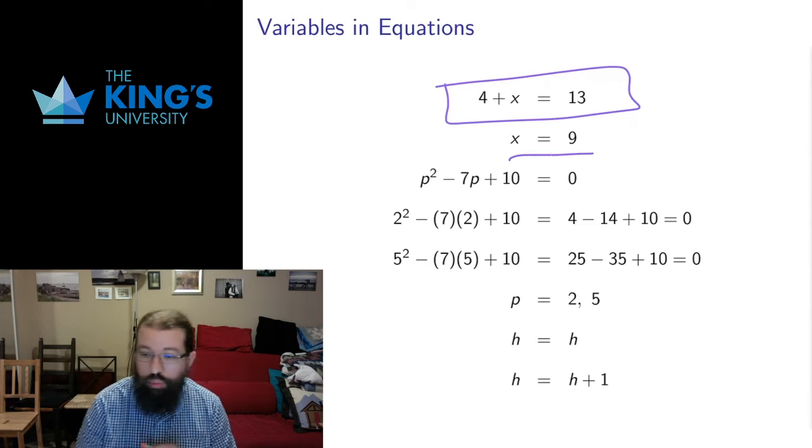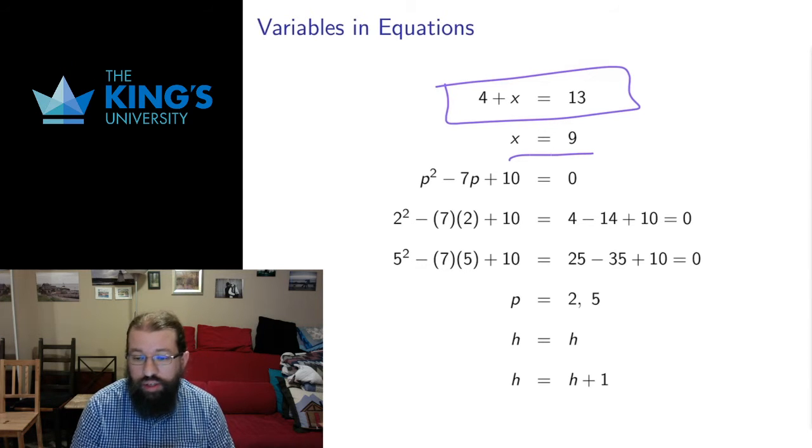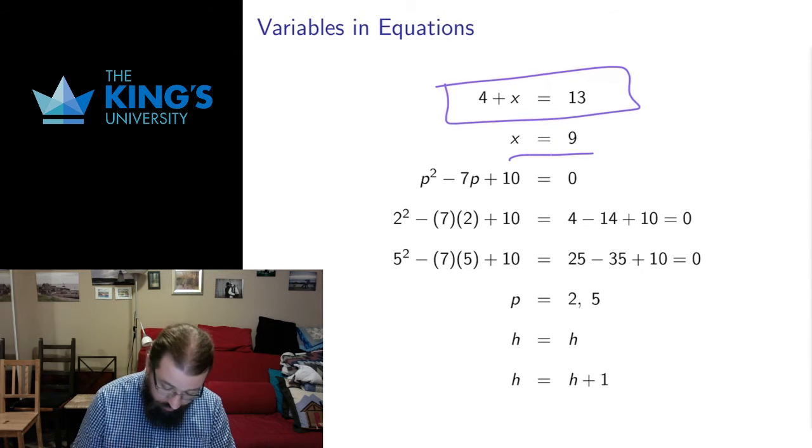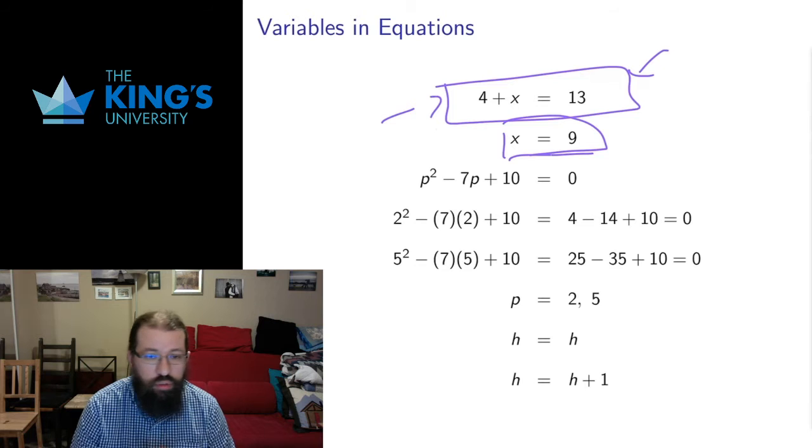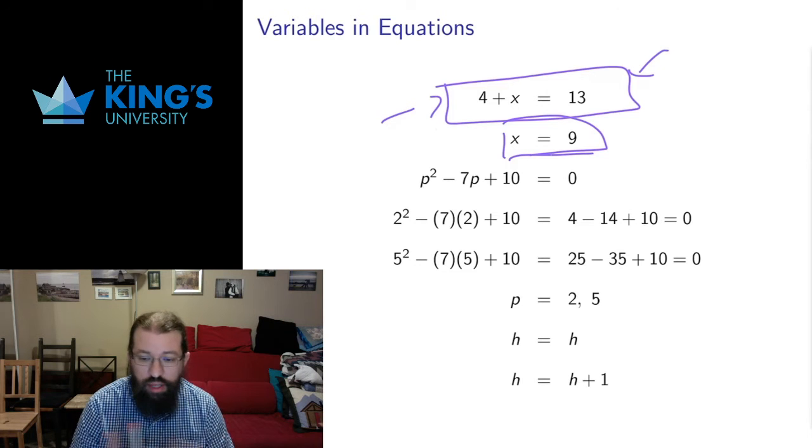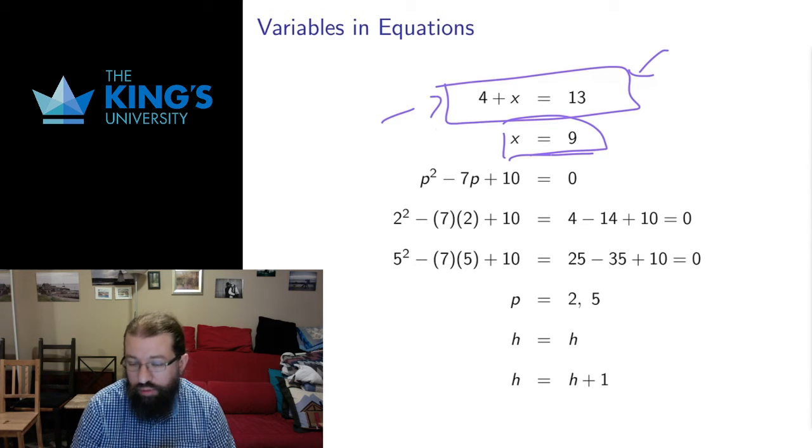In this case if we put in x equals 9, 4 plus 9 is indeed 13. So x equals 9 is the solution to this fairly straightforward thing. That is the answer to the question implicitly asked by this equation. You should think of each equation with a variable as implicitly asking a question and you're trying to figure out the answer to that question.